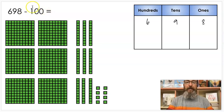On this one I'm going to subtract 100. So I'm taking away 100. I can take away 100 here. I can also take away 100 here. If I take away one hundred, I still have 5 left. So now I have 500. I still have 9 tens which makes 90. I still have 8 ones which makes 8.